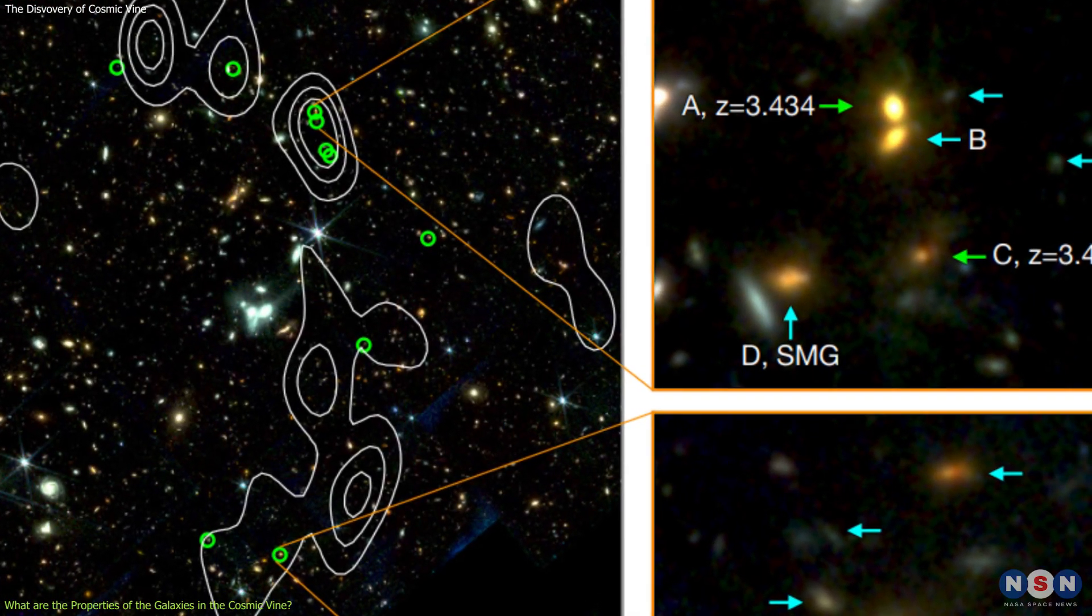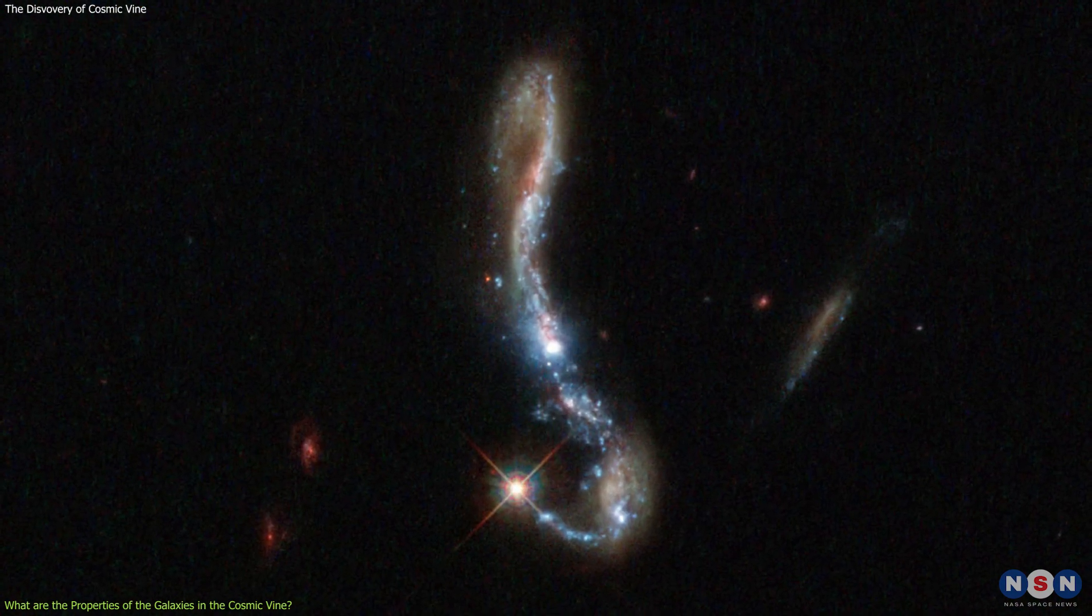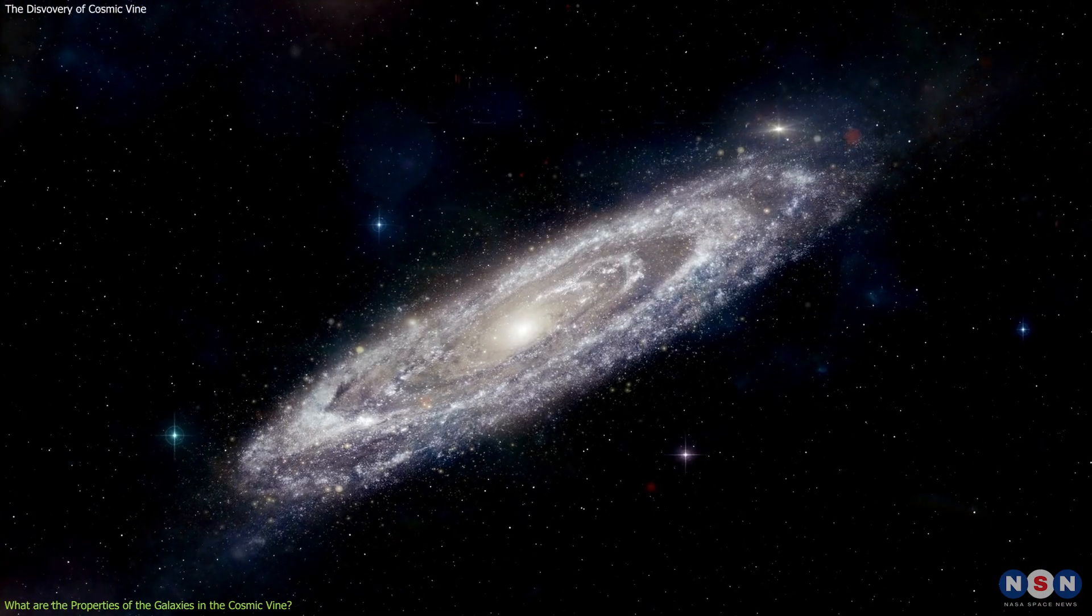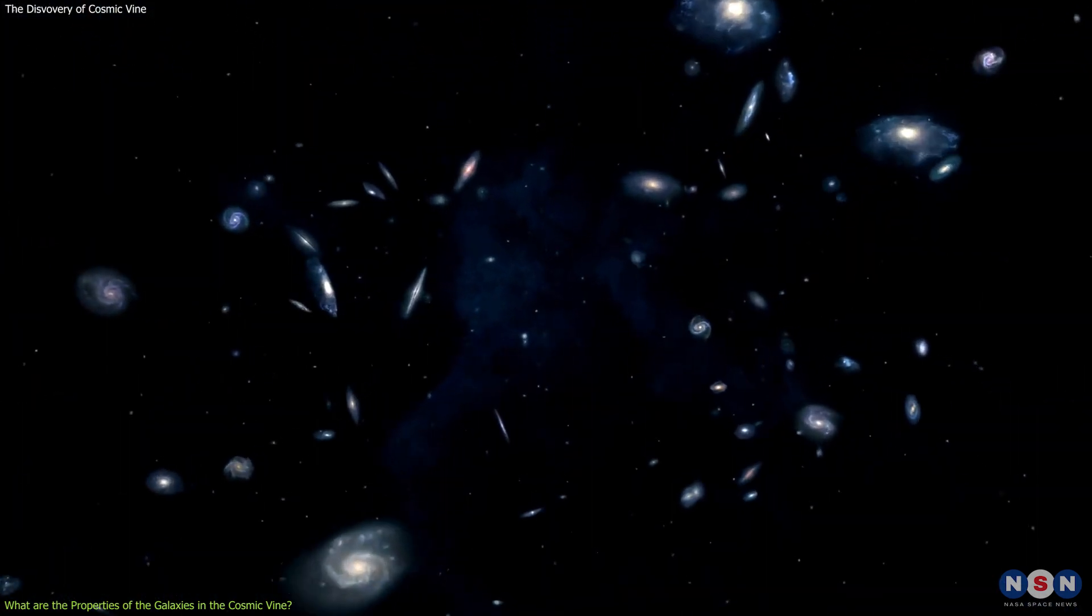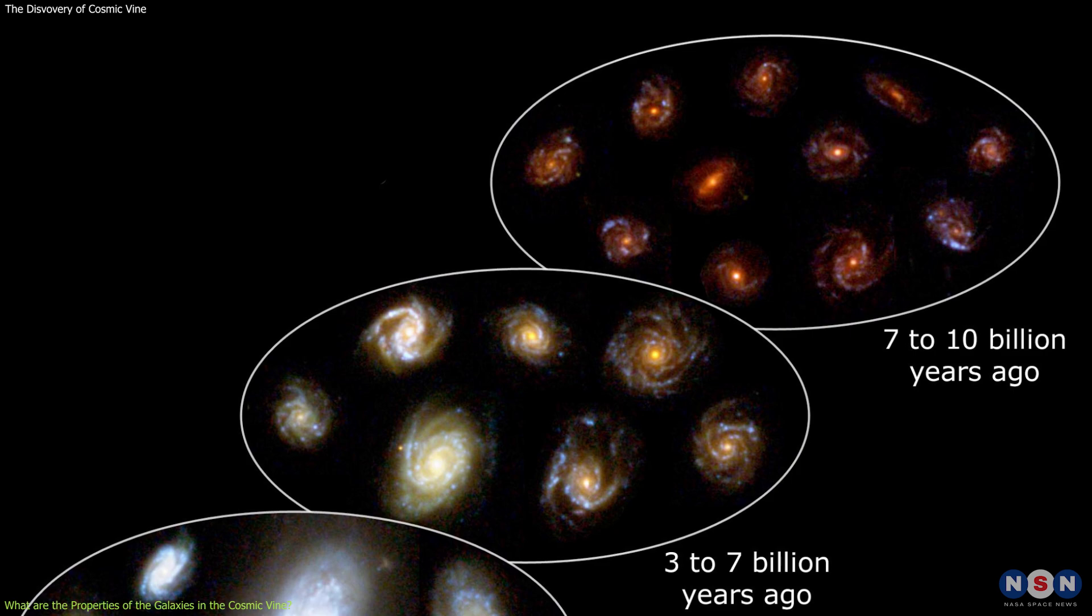Some of the galaxies in the Cosmic Vine are very distorted and asymmetric, while others are more regular and symmetric. The diversity and complexity of the galaxies in the Cosmic Vine reflect the different stages and modes of galaxy evolution in the early universe.